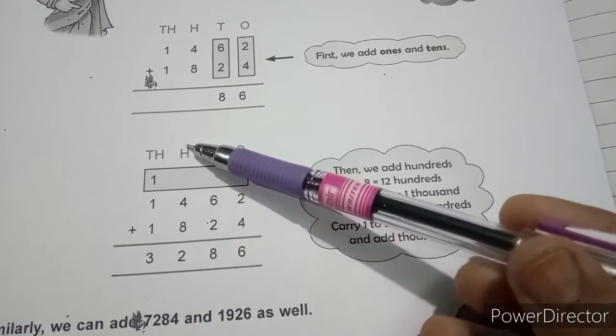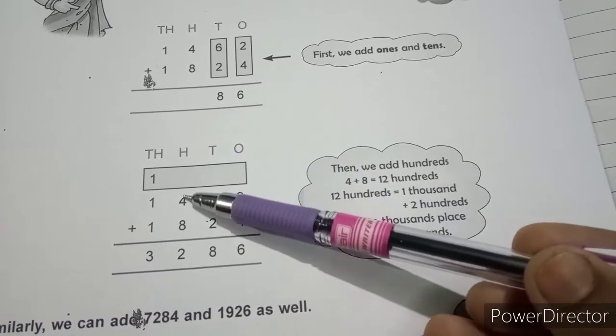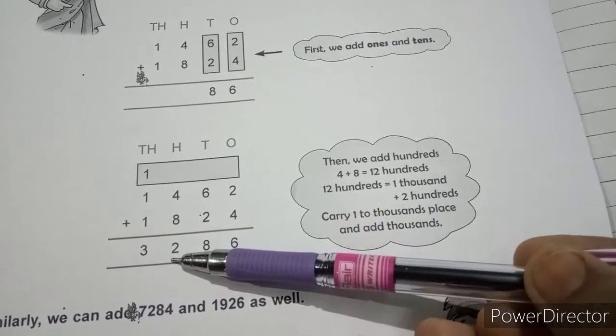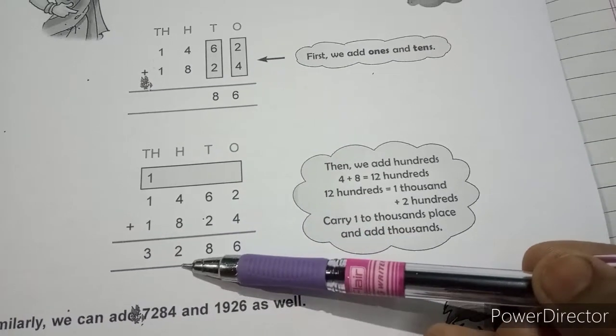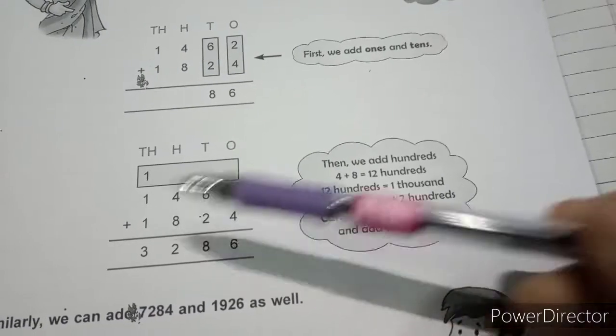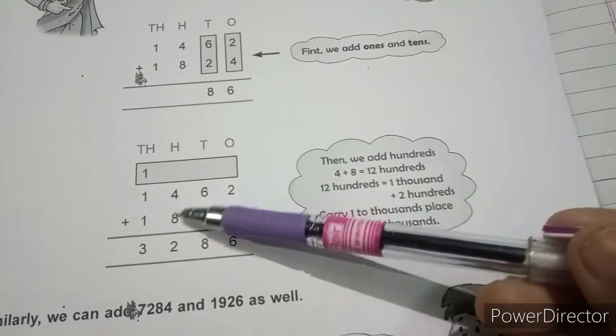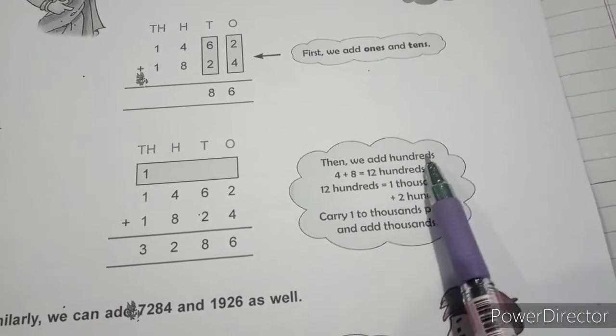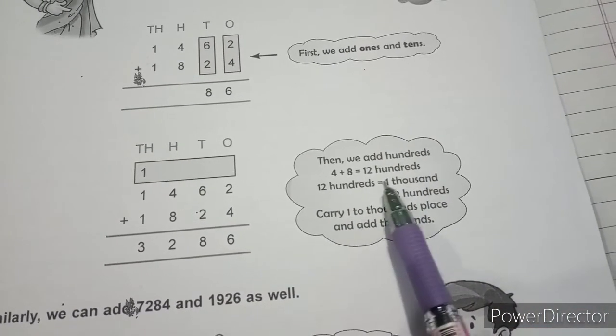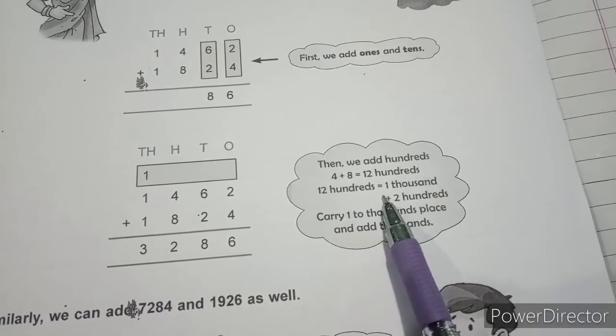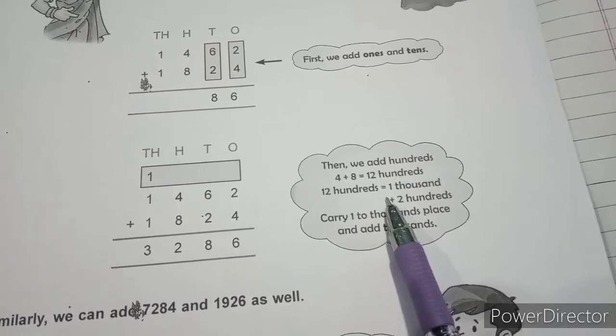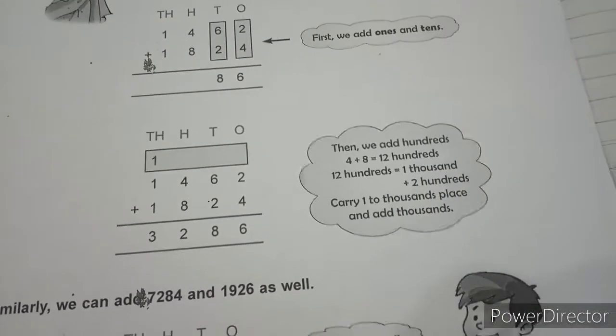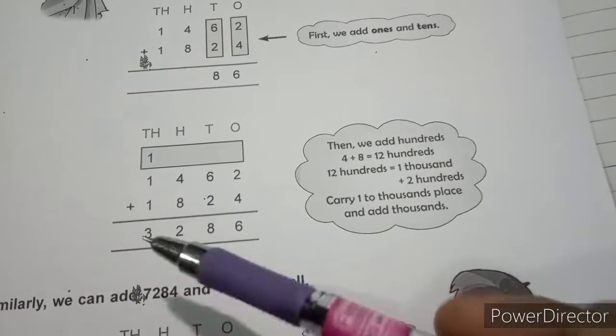But after that when we will add the digit at hundreds place, we will get the addition as 12. That means this is 1200. 400 plus 800 is equal to 1200. 1200 means 1000 plus 200.